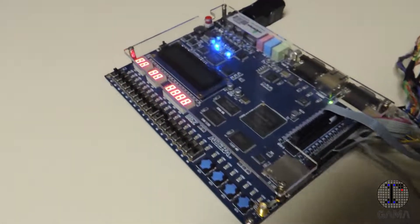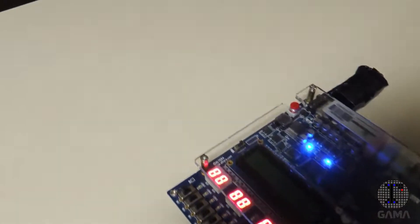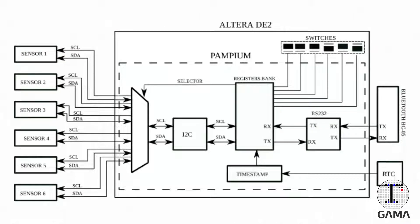The acceleration data is collected through 6 accelerometers, which provide linear acceleration on the x, y, and z axes. Each of the 6 sensors can be activated or deactivated independently according to the application using switches. The configurable microcontroller PAMPU, implemented on the FPGA, is responsible for transmitting the acceleration data and time to the computer. The communication between the sensors and PAMPU is done through the I2C communication protocol. The communication between PAMPU and the Bluetooth module is via the RS-232 communication protocol. Finally, the communication with the computer is done through the Bluetooth protocol.